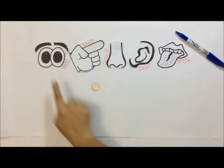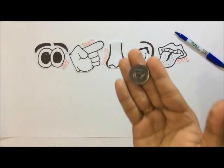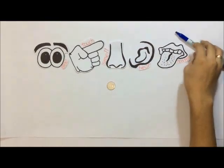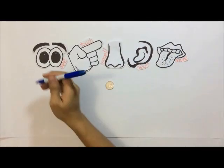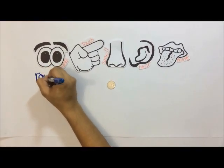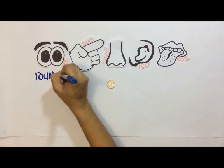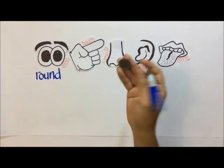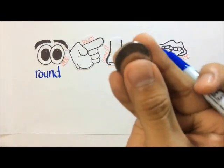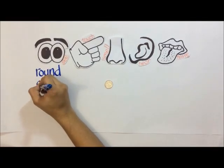Now let's start observing the object using our eyes. We see that the object is brown. We can also see that the object is shiny and its color is silver.